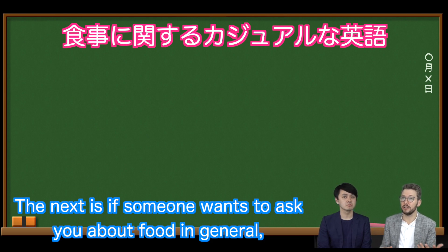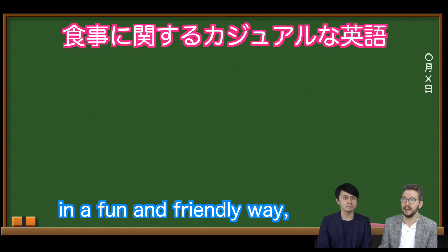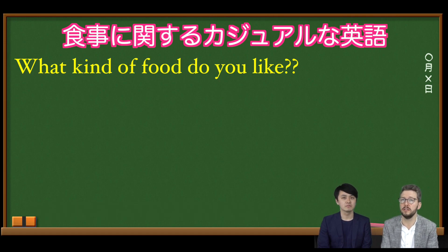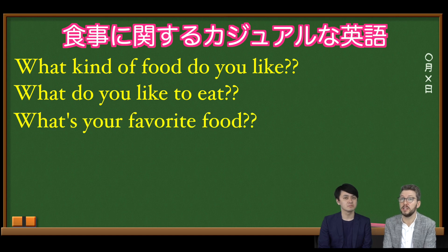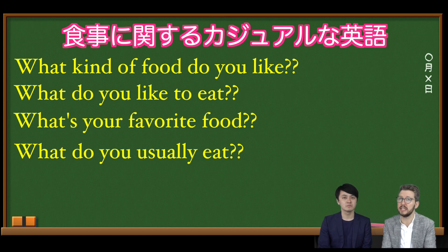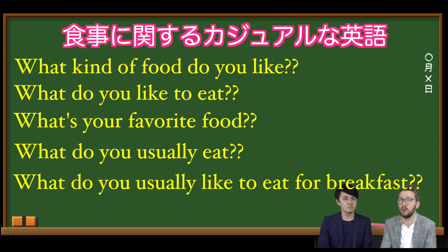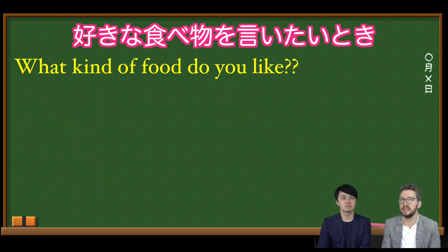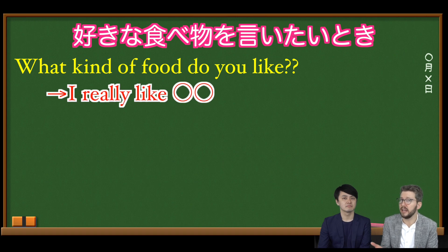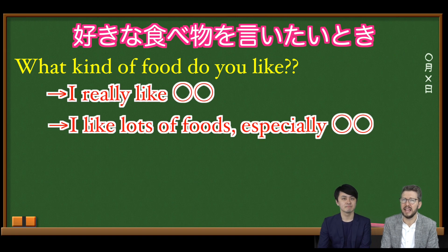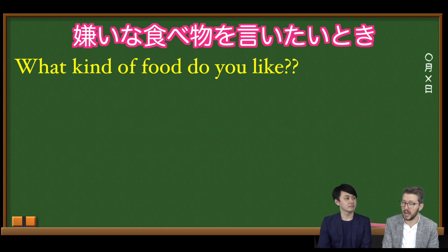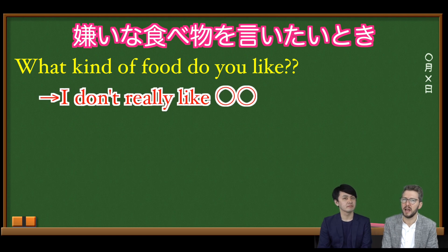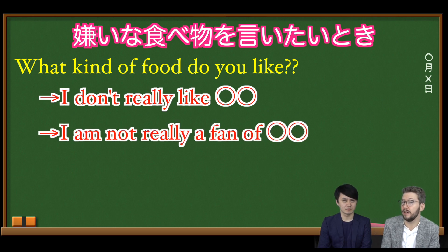If someone wants to ask you about food in a fun, friendly way, you might hear questions like: 'What kind of foods do you like?' 'What do you like to eat?' 'What's your favorite food?' 'What do you usually eat?' or 'What do you usually like to eat for breakfast, lunch, or dinner?' Some ways to answer: 'I like lots of foods, especially...' or 'I pretty much love everything.' If it's the opposite, you can say 'I don't really like [something],' or 'I'm not really a fan of [something]' — that's a lighter way of saying you don't like it.